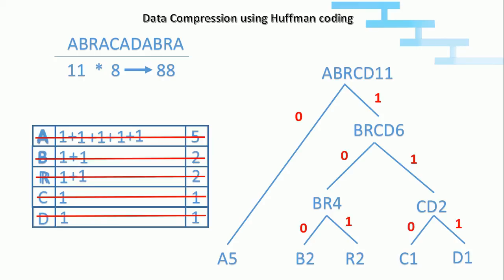Now we have computed the tree. Now we need to find code for each and every character. For A it is 0 because it has only 0 here. And for B it is 100. And for R it is 101. And for C it is 110. And for D it is 111.